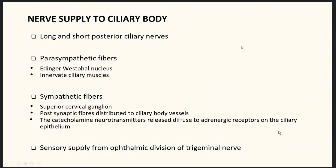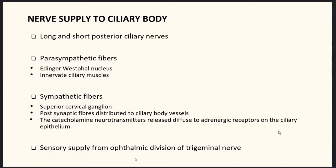Nerve supply to the ciliary body is from the long and short ciliary nerves. Parasympathetic innervation is via the short ciliary nerves to the ciliary muscles. Sympathetic fibers synapse in the superior cervical ganglion, and post-synaptic fibers supply the ciliary blood vessels. Catecholamine neurotransmitters released from sympathetic nerve endings diffuse to adrenergic receptors on the ciliary epithelium. Sensory supply is from the ophthalmic division of the trigeminal nerve. Vessels have alpha-2 receptors and the epithelium has beta receptors.